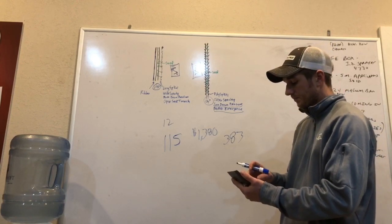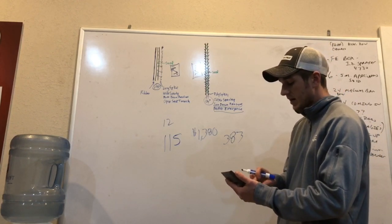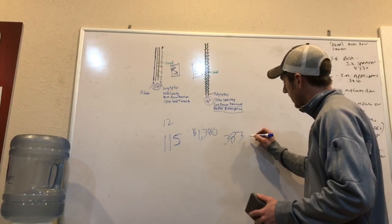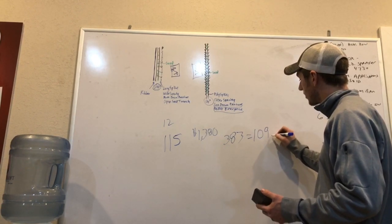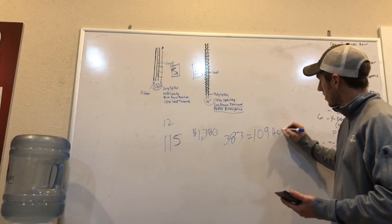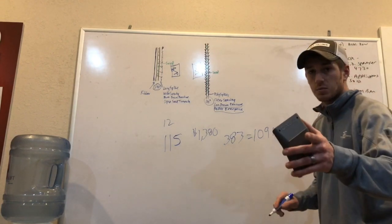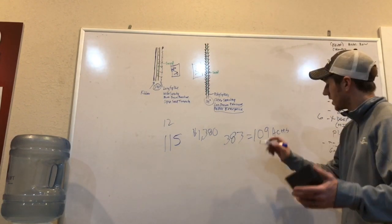383 bushels divided by a three and a half bushel advantage, that comes out to 109 acres for a payoff. That's to break even, but we want to make money. We're here to make money for you farmers.